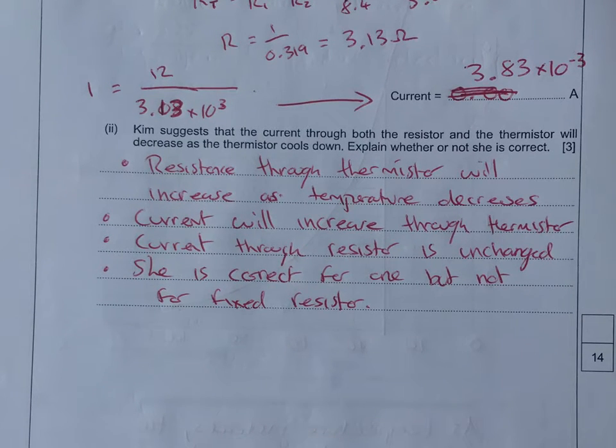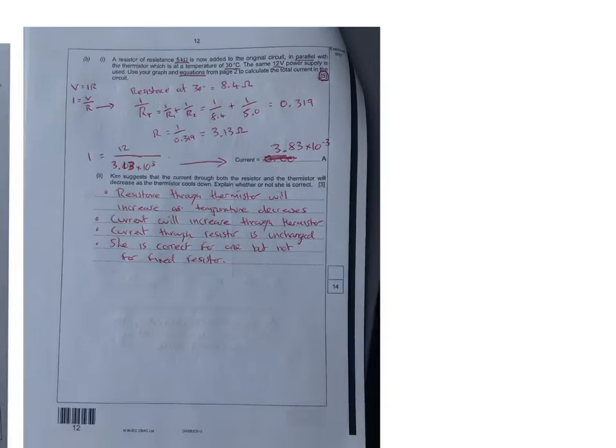Kim suggests that the current through both the resistor and the thermistor will decrease as the thermistor cools down. Explain whether or not she is correct. This is theory on recognizing how thermistors work. Resistance through the thermistor will increase as the temperature decreases. That's the same if you're given a light dependent resistor. The current therefore will increase through the thermistor. Current through the resistor is unchanged. She's correct for one but not for the other.